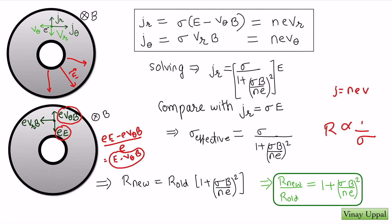The resistance has increased because of the magnetic field. To understand this intuitively: without the magnetic field, the electron experienced only a radially inward electric force. However, in the presence of the magnetic field, there is an opposing force eVθB trying to decelerate the electron radially. Therefore the net radial force is reduced, and the resistance increases. So this is the qualitative understanding, and mathematically we have seen that resistance increases by the factor (1 plus (sigma B / Ne)²).